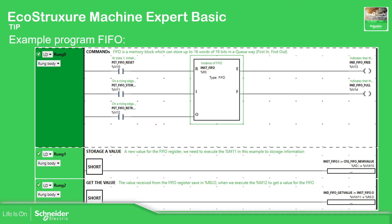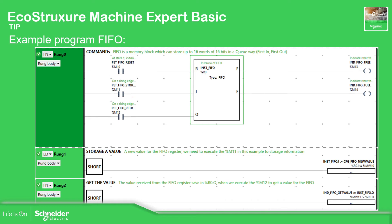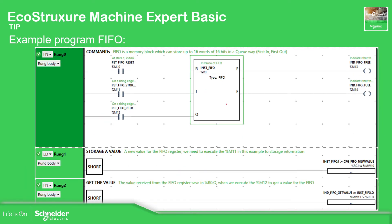This is an example of how you can program the software. You assign a few percentage M variables as you want for status. Importantly, if you want to enter a new value, you use the colon-equal assignment to move a new value into the register. On the retrieval side, you move what is inside into a percentage NW variable such as %NW11. You can see here it's the same logic, but one instance is configured as LIFO and the other as FIFO.